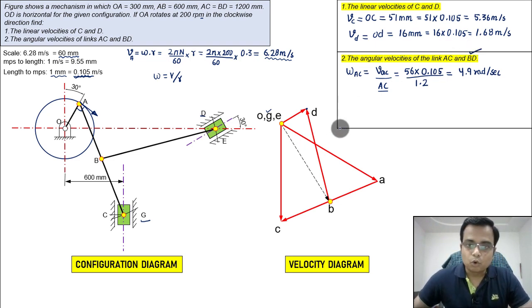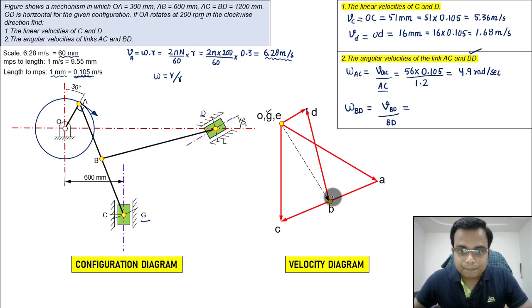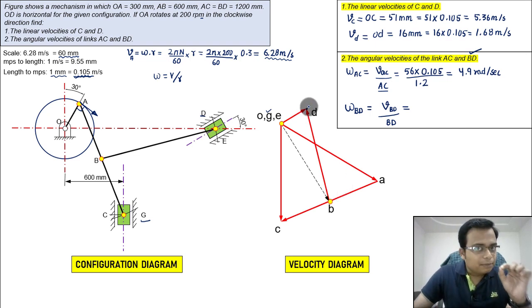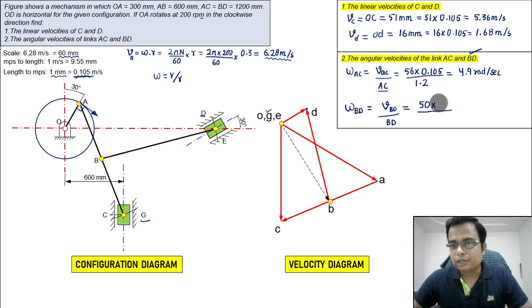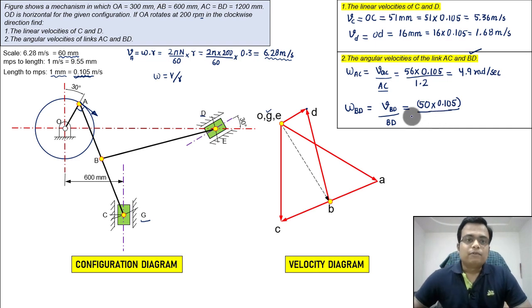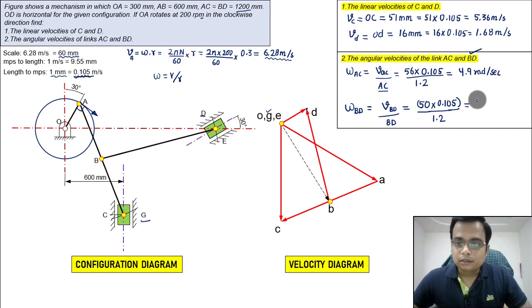Similarly, omega BD equals linear velocity BD divided by the length BD. Measure BD on the velocity diagram — approximately 50 mm. Multiply by 0.105 to convert to meters per second. BD is 1.2 meters. Dividing gives omega BD equal to 4.375 radians per second.